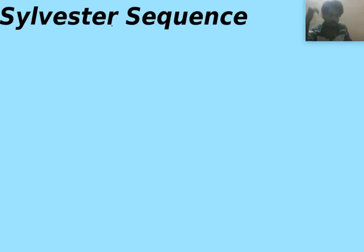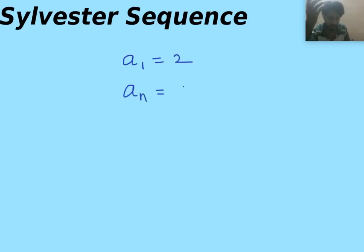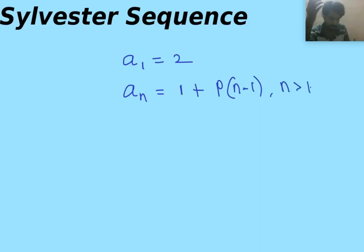Coming to the problem, the Sylvester Sequence is given by the following recurrence where the first term is 2, and the rest of the terms are given by the simple recurrence in which the nth term is simply 1 plus the product of the first n minus 1 terms. Let us denote the product of first n terms as p of n.